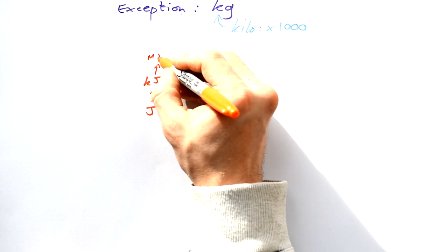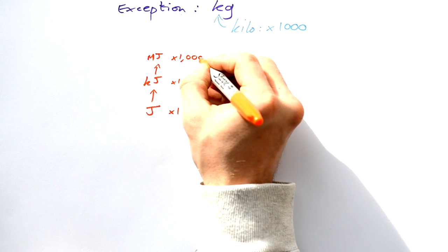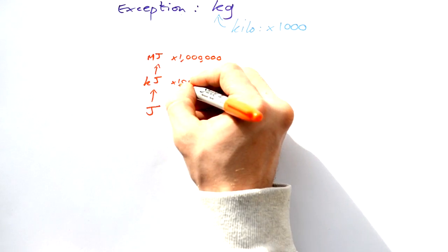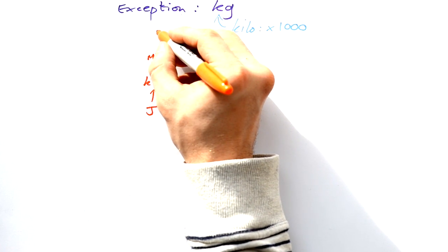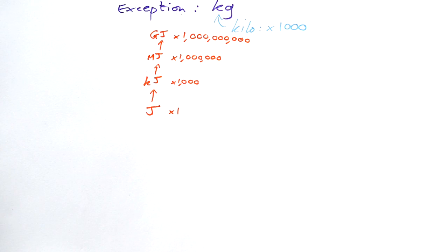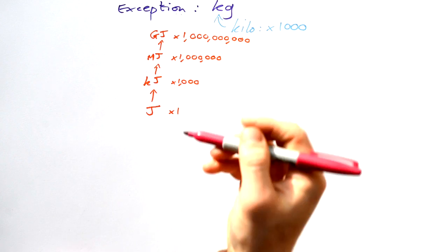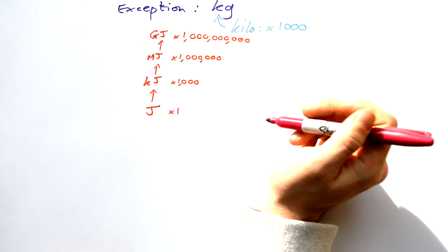Let's go one step further. What about if we have megajoules? Mega means a million. Let's go one more - gigajoules. That's times by a billion, or a thousand million. Do you notice something going on here? Every time we go up one of these prefixes, we're actually timesing by another thousand.